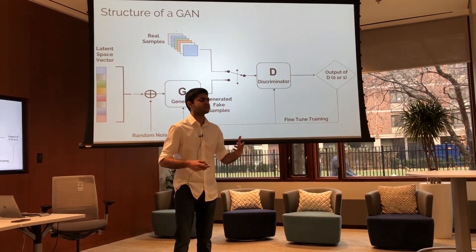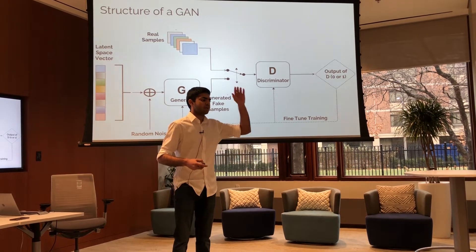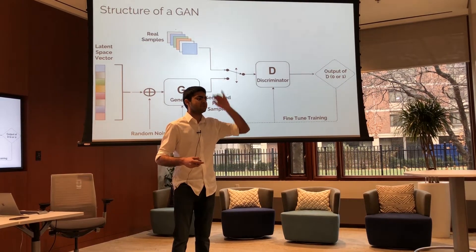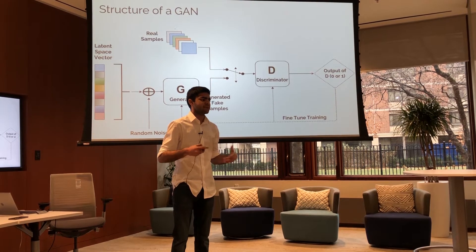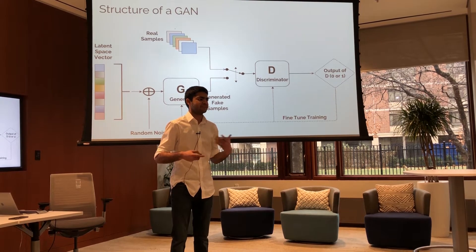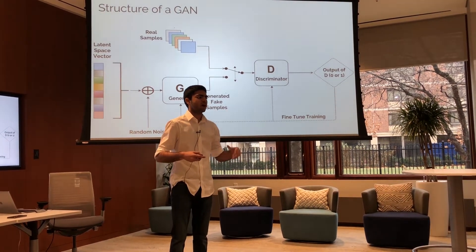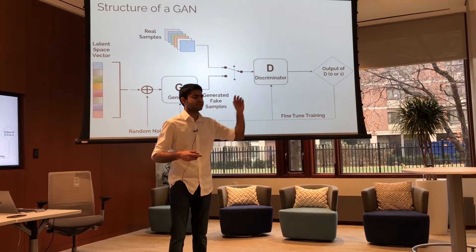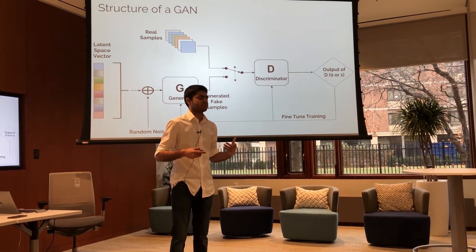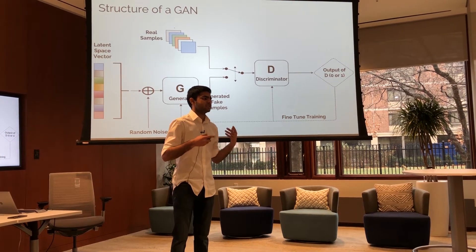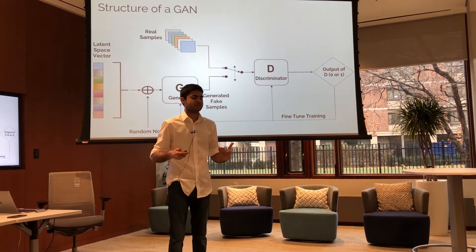The first neural network is a generator, which takes in a random input vector of random numbers, takes that noise, and generates it into samples or images. Those images, along with real training data — real images — are fed into the discriminator, whose job is to figure out which paintings are real or fake.